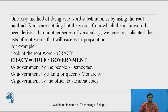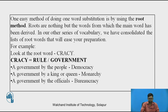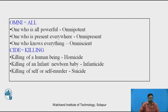For example, the root word krasi is related to rule or government. A government by the people means democracy. A government by a king or queen — monarchy. A government by officials — bureaucracy. The root omni means all: one who is all-powerful is omnipotent; one who is present everywhere is omnipresent. The root cide means killing: killing of a human being is homicide; killing of oneself is suicide.